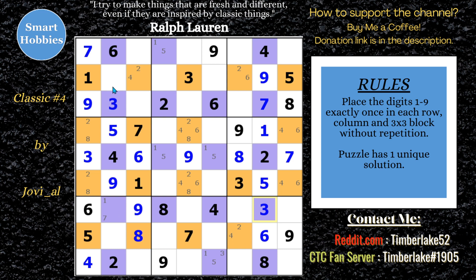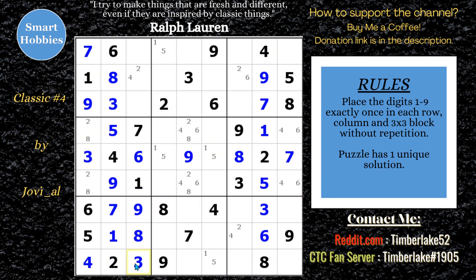Now what do we have here? A one, a seven, and an eight. Here's a one and a seven, so this has to be an eight. Here's your seven, so that's a one. And there's your seven. What's remaining in this block right here? Looks like a three. We can remove the colors now — I don't think they need to help anymore.